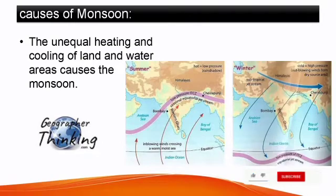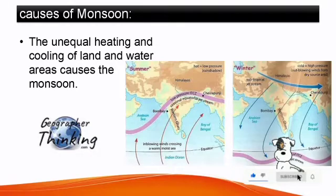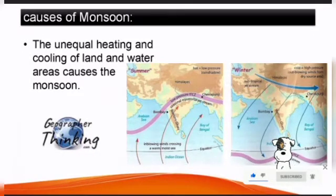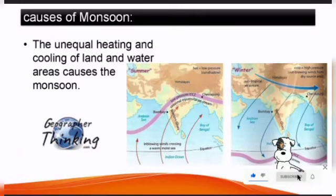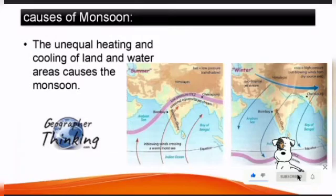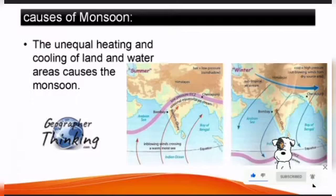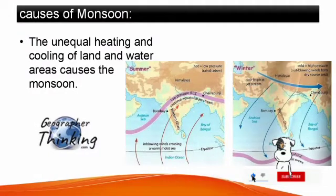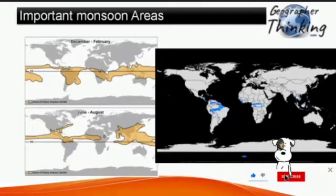The causes of monsoon winds: the unequal heating and cooling of land and water areas causes the monsoon. During summer, when the land has become quite hot, the contiguous ocean areas are relatively cooler. The air over land rises in the form of convectional currents, and to replace it, moist air from the ocean flows in. During winter, the condition is reversed, and winds blow from the land towards the ocean. These seasonal land and sea winds are known as monsoon winds.